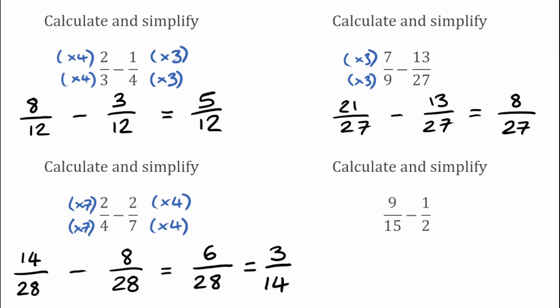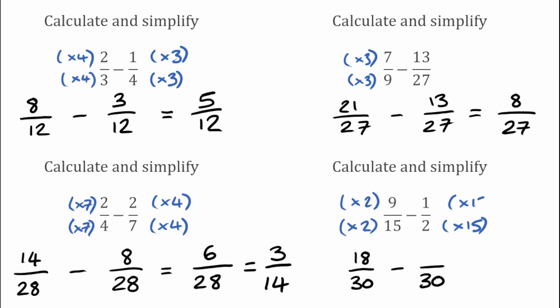For this last example we've got 9 over 15 take away a half. We're looking for the lowest common multiple of 15 and 2, which is 30, so we're going to have two fractions over 30. To get 30 we'd multiply the 15 by 2, so we also multiply the 9 by 2 to get 18. On the right hand side we'd multiply the 2 by 15, so we also multiply the top by 15: 1 times 15 gives 15. Subtracting: 18 over 30 take away 15 over 30 gives 3 over 30. Simplifying by dividing top and bottom by 3, that simplifies to 1 over 10, and that would be our final answer for that one.